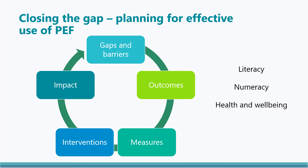Stage two is to identify the outcomes for your plan. Outcomes are the statements that set out the change you want to make happen — they articulate the improvement you want to see. For each outcome, a set of measures is required. Measures are the data to be gathered to allow you to measure the impact of your work and determine whether or not the outcome has been achieved.